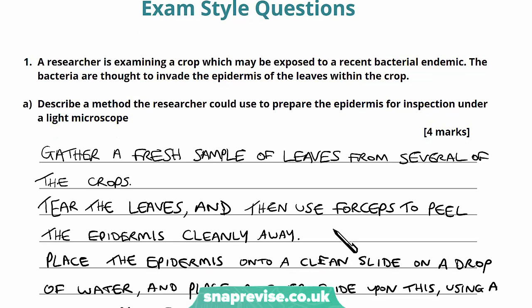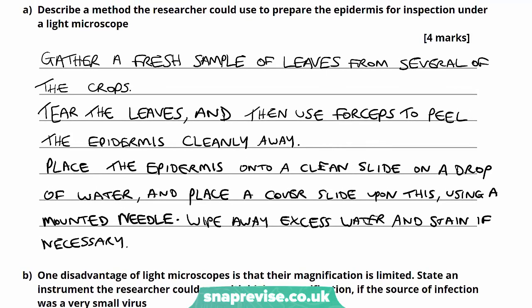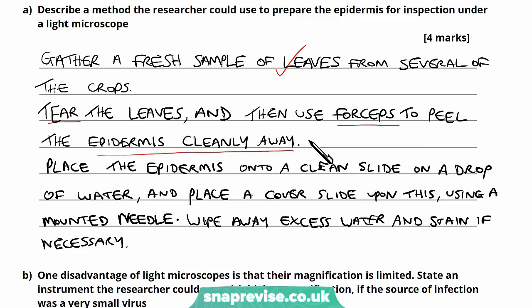The first thing to write is: gather a fresh sample of leaves from several of the crops. Taking different samples is good because it covers a range of plants where some might be infected and some might not. We then tear the leaves and use forceps to peel the epidermis cleanly away — mentioning forceps and peeling the epidermis off would be another mark. We then place the epidermis onto a clean slide, onto a drop of water, and place the cover slide upon this using a mounted needle. We use forceps, mounted needles, and also gloves to reduce contamination.